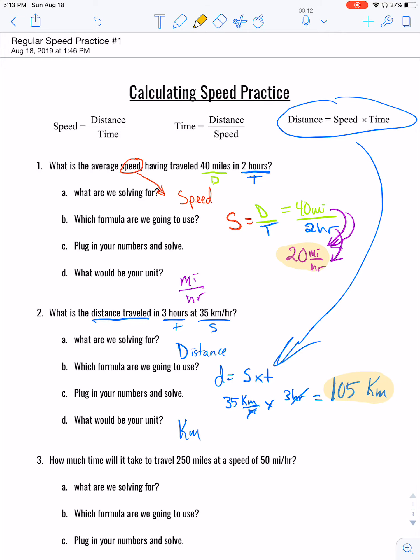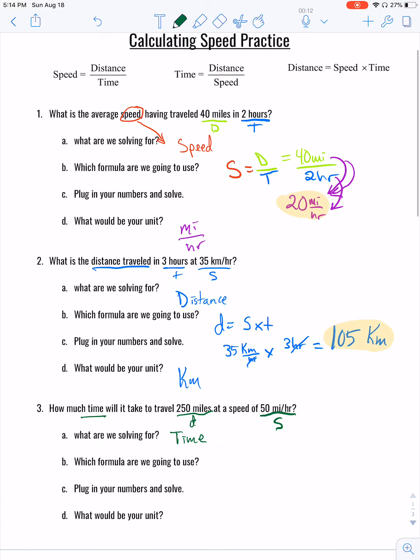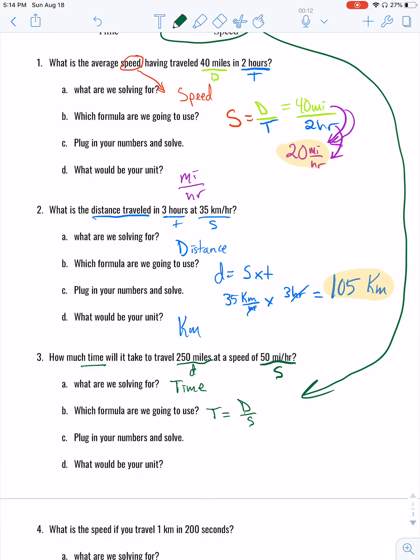Moving on to the next one. How much time, so we're solving for time, will it take to travel 250 miles, that's distance, at a speed of 50 miles per hour is speed. Which formula am I going to use? Let's scroll up here. We're going to use this guy. So T equals D over S, distance over speed. Go ahead and plug in our numbers here, so 250 miles up top divided by our speed of 50 miles per hour.